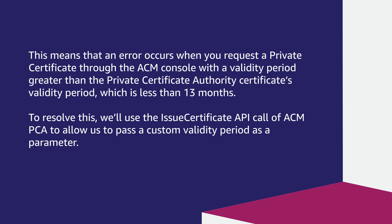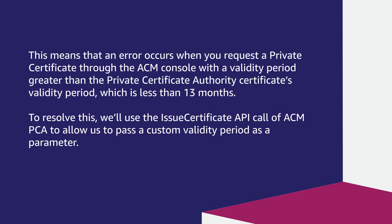To resolve this, we'll use the issue certificate API call of ACM PCA to allow us to pass a custom validity period as a parameter. Because we are going to be using the AWS command line interface, make sure that you have installed the latest version of AWS CLI on your computer or an Amazon Elastic Cloud Compute instance.